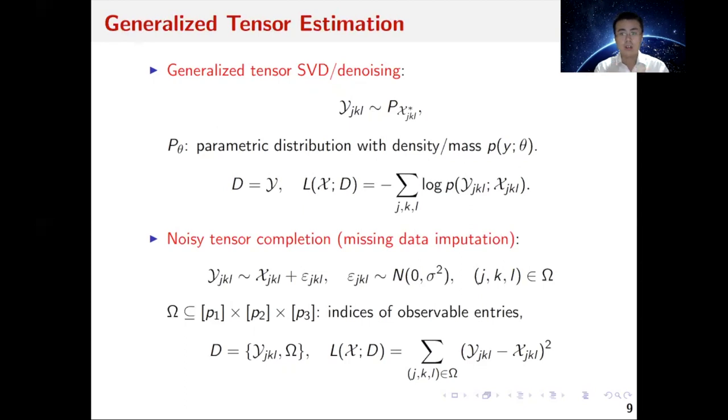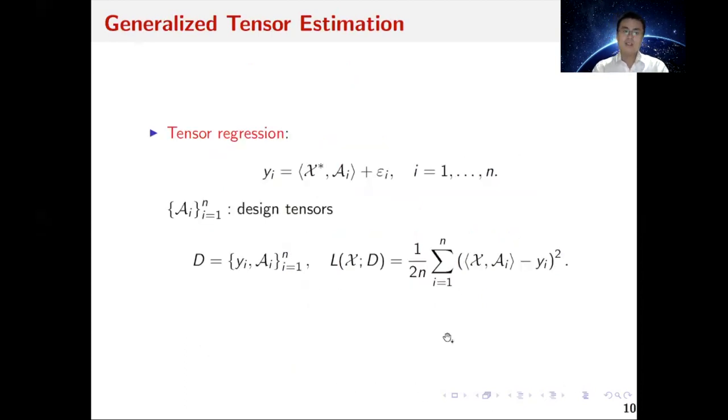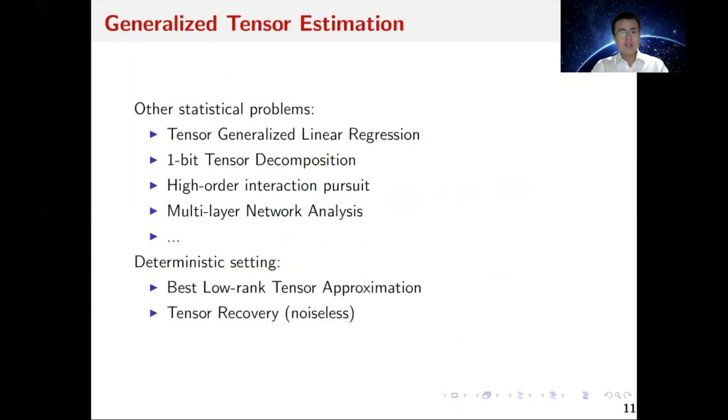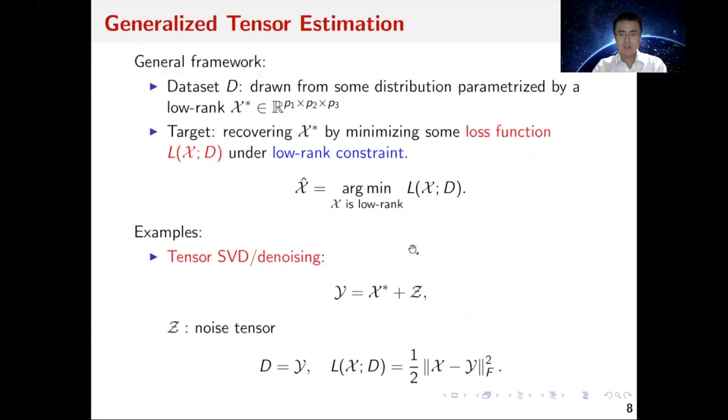A similar story applies to noisy tensor completion or missing data imputation. Suppose we observe Y but only in a limited number of entries. We can write down the dataset this way and then the log-likelihood in this way. Tensor regression follows a similar approach. This framework covers the following list of applications and is also interesting in some deterministic settings without the probabilistic model.